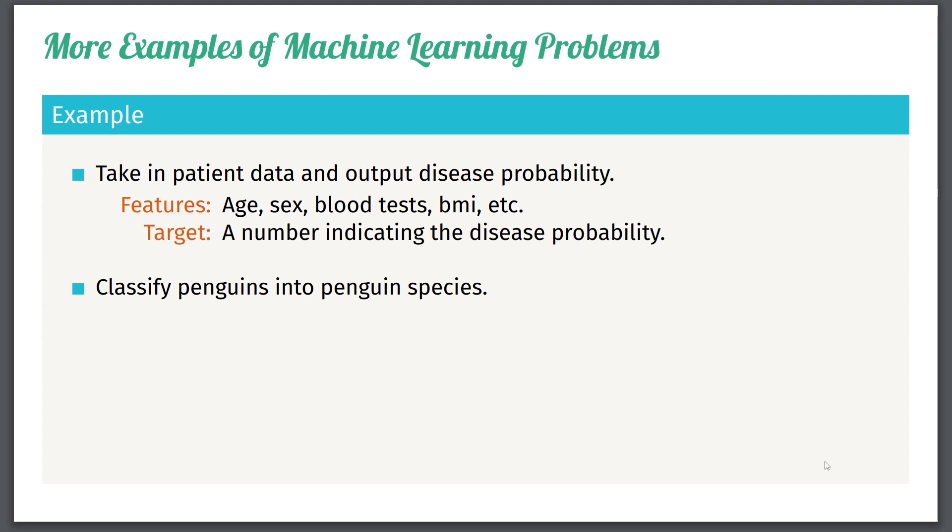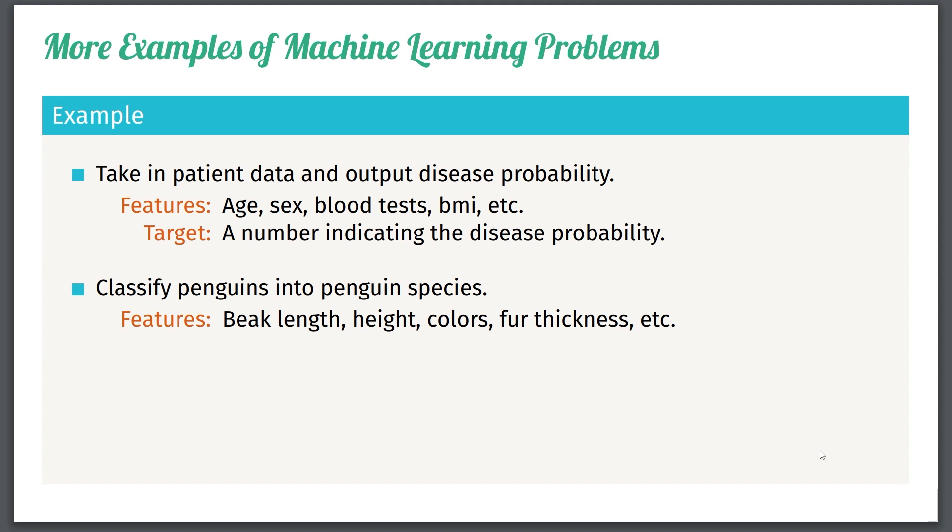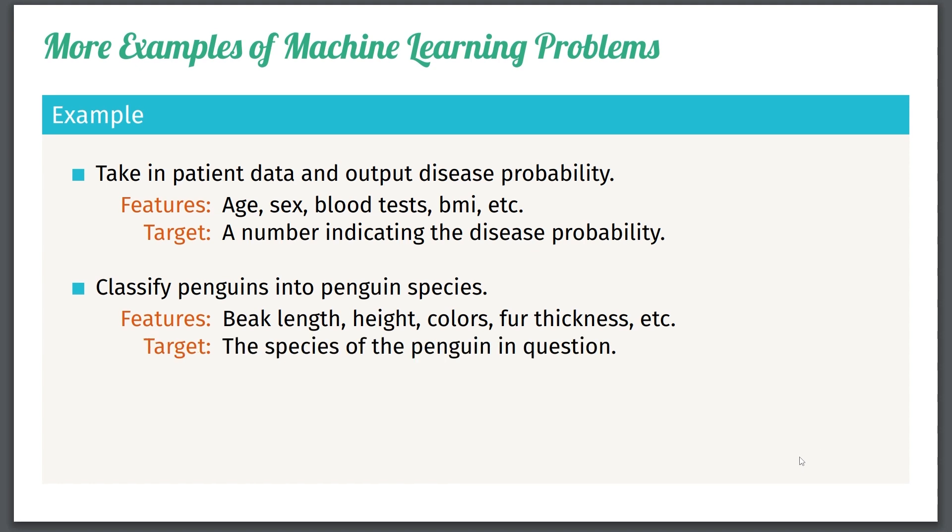So a second example is to classify penguins into penguin species. You might measure their beak length or height or color, or maybe their fur thickness and so on. And you want to predict something and that target is the species of the penguin you're looking for.